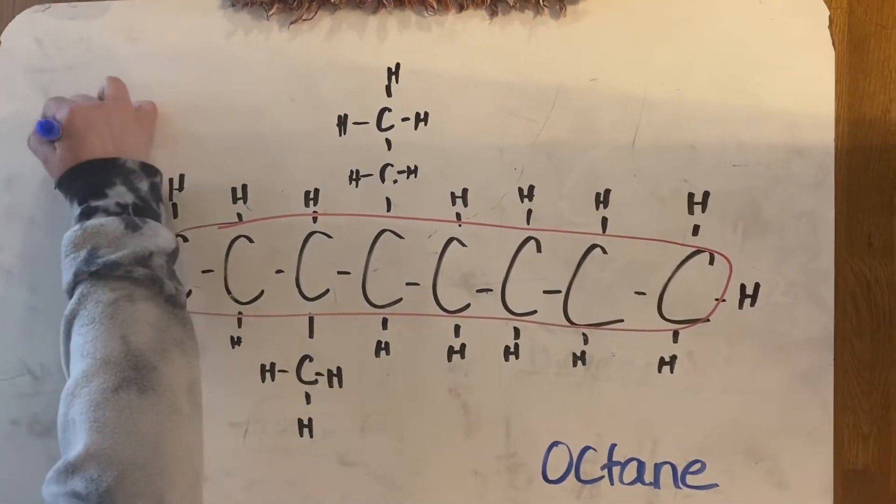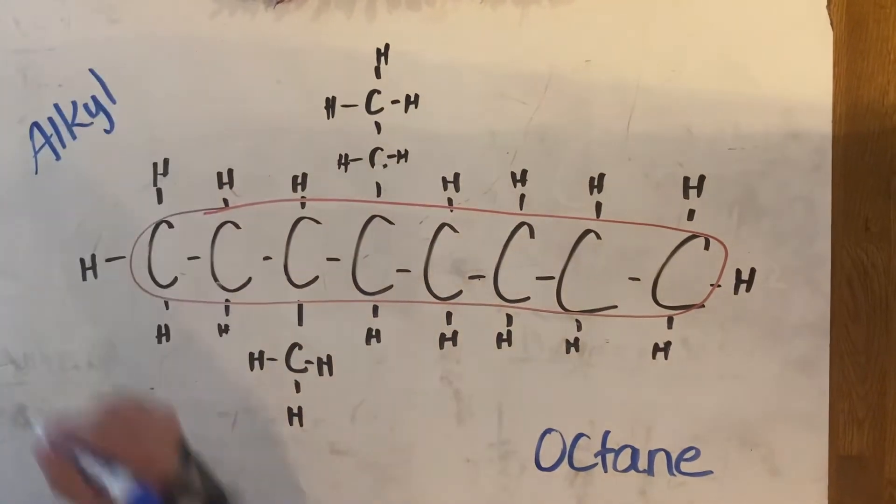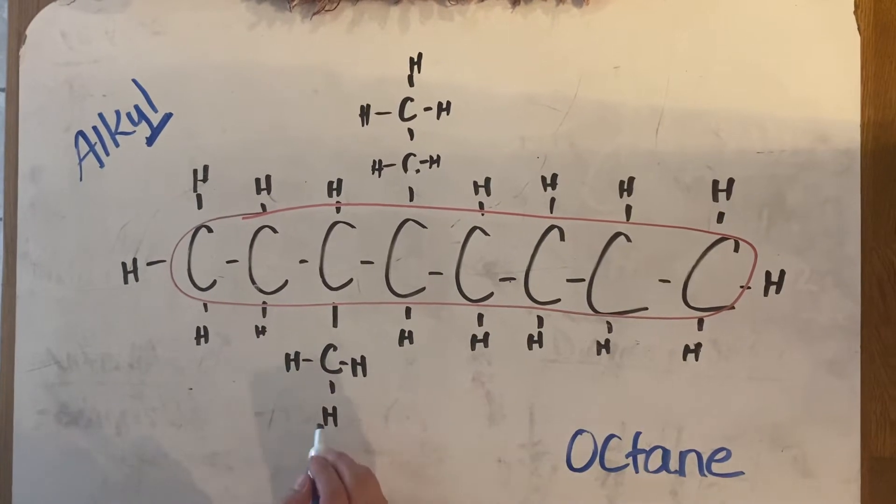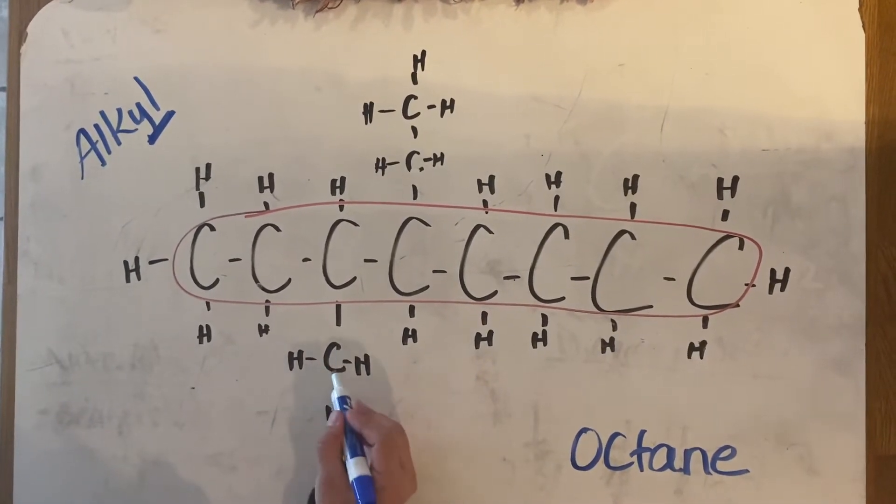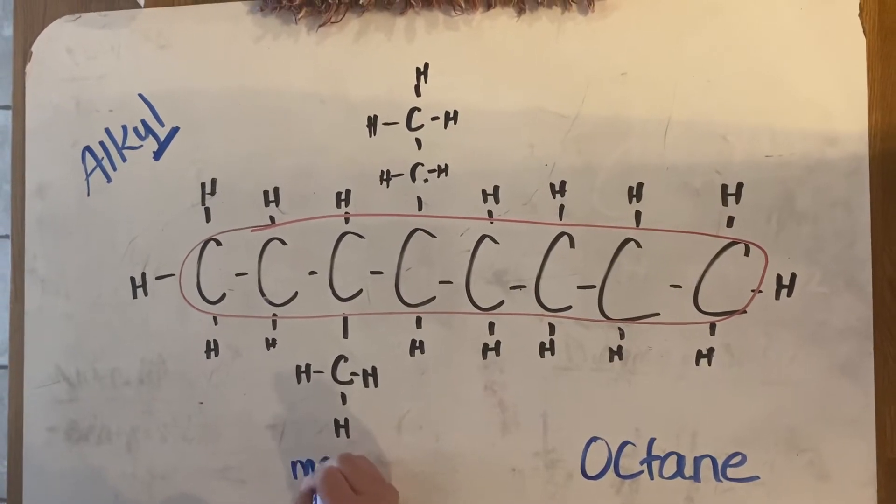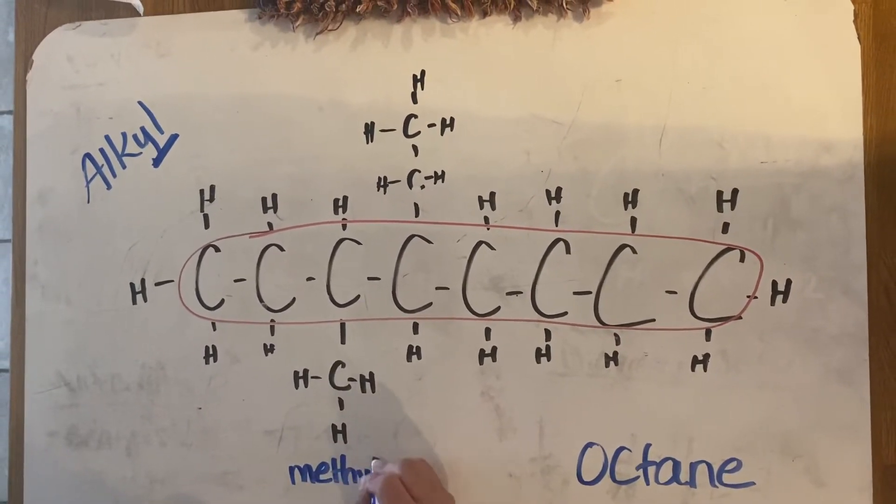Remember, anything that comes off the main chain that's carbon and hydrogen is called an alkyl group. It's that YL that's important to us. Let's look at this one first. I see it's a one-carbon group. Go to Table P - one carbon means meth. Since it's an alkyl group, I'm going to call it methyl.